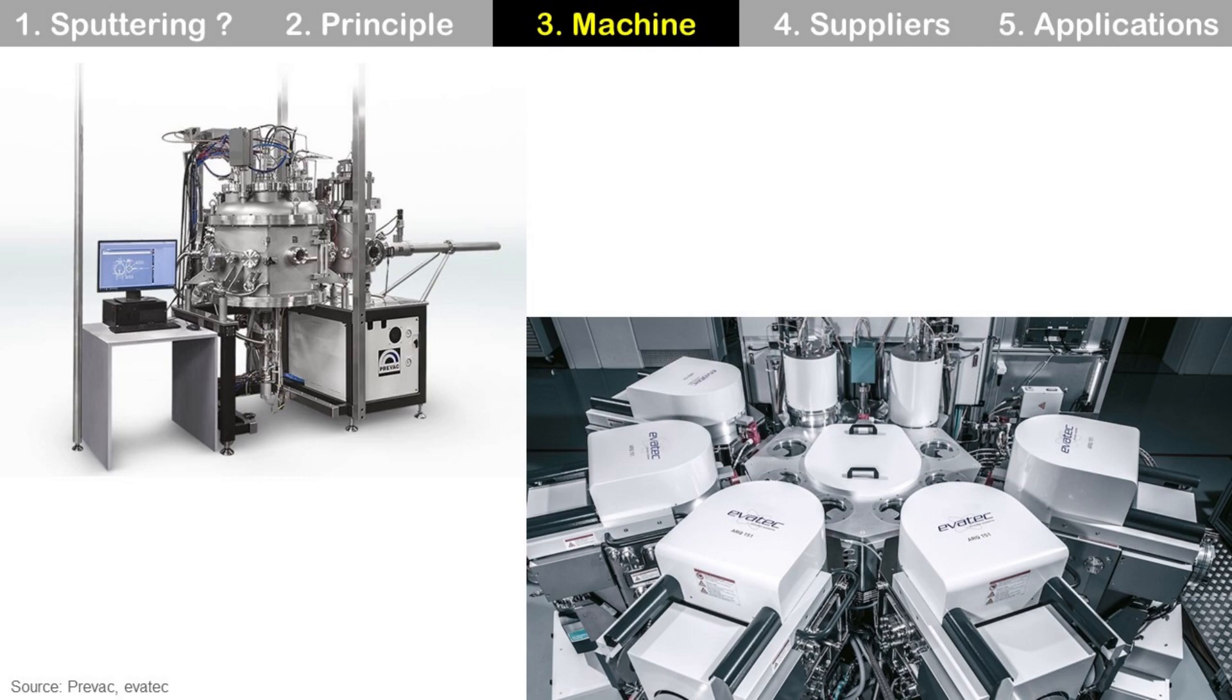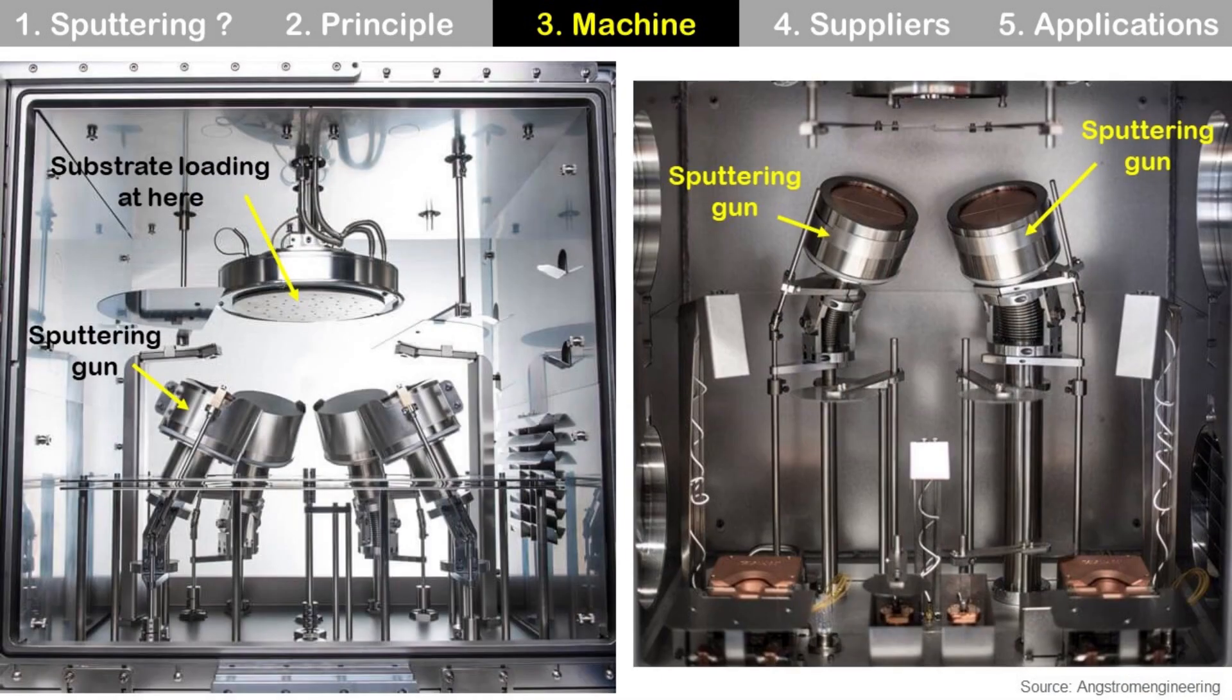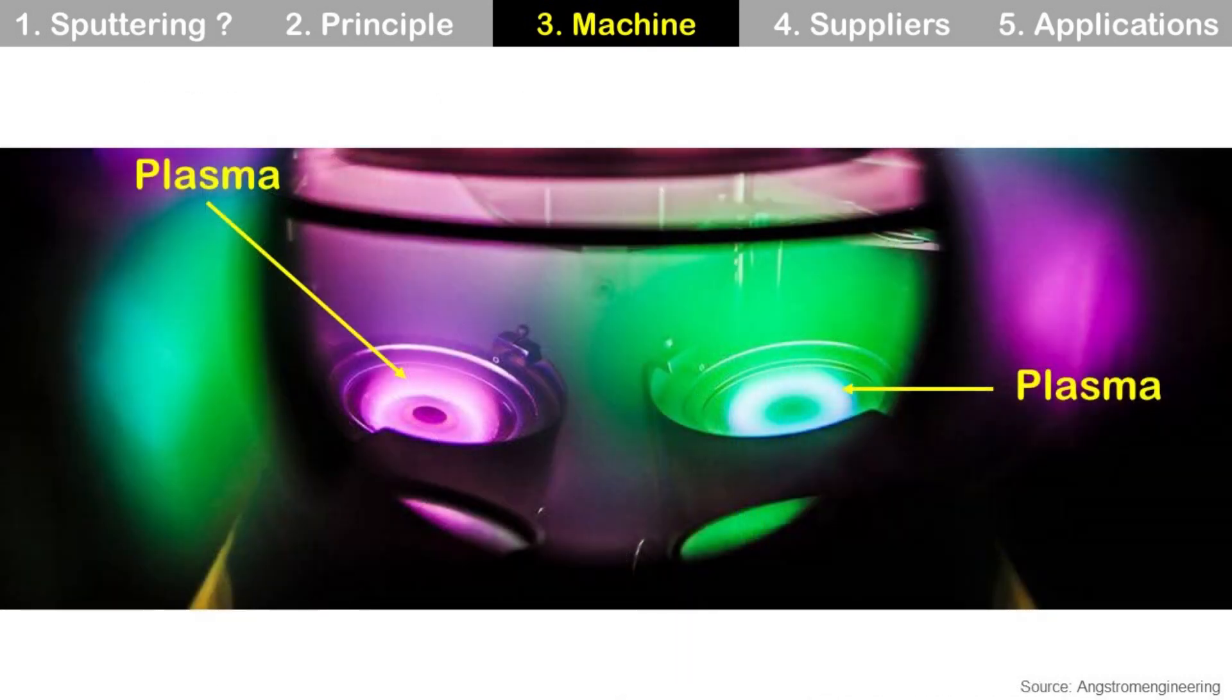We already saw a sputtering machine, and these are more examples. Usually, the vacuum chamber is made of stainless steel. Inside the vacuum chamber, we have sputtering guns or sputter sources with targets. At the left, we can see four sputtering guns, and at the right, there are two sputtering guns. If we look from the top, sputtering guns look like this. We also can see shutters in front of sputtering guns. Shutters are used to control the amount of sputtering by covering or opening the target. In here, plasma is generated, so through the window of the vacuum chamber, we can see plasma in front of the target.